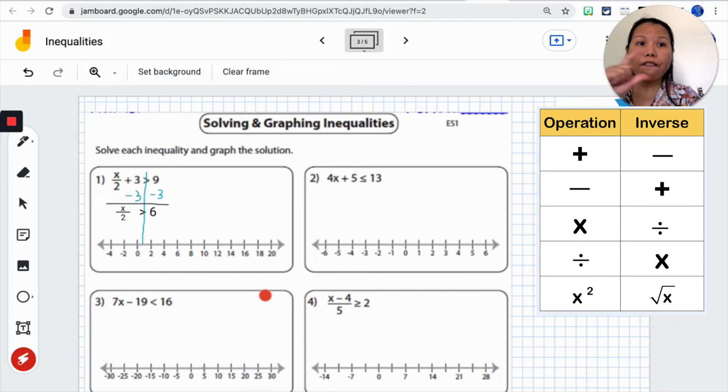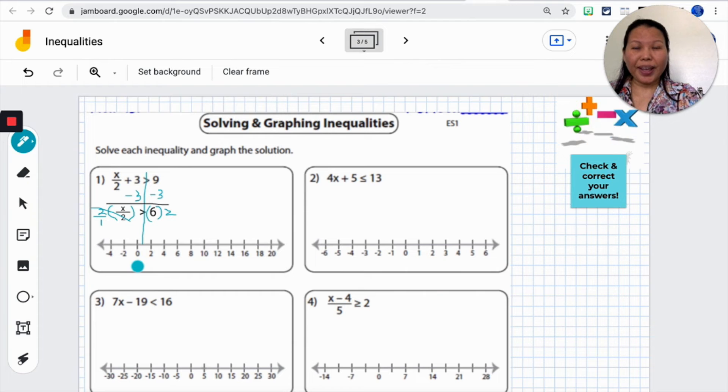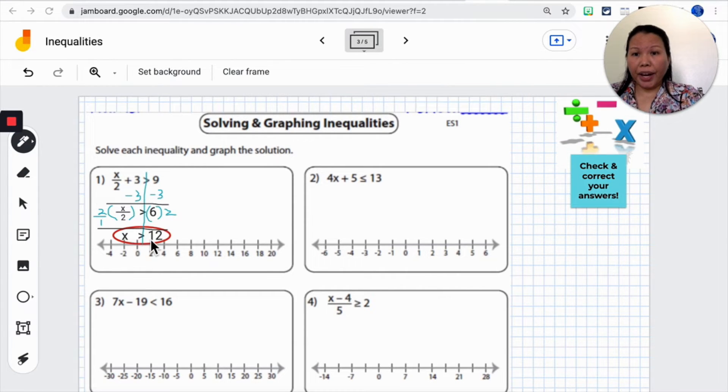Only again, only when I multiply or divide a negative number, that's when it will flip the opposite way. And remember when we are multiplying 2 on the left hand side, this is like 2 over 1. And that's how we can cancel out the 2 right here. And x is going to be by itself. X is greater than 12.